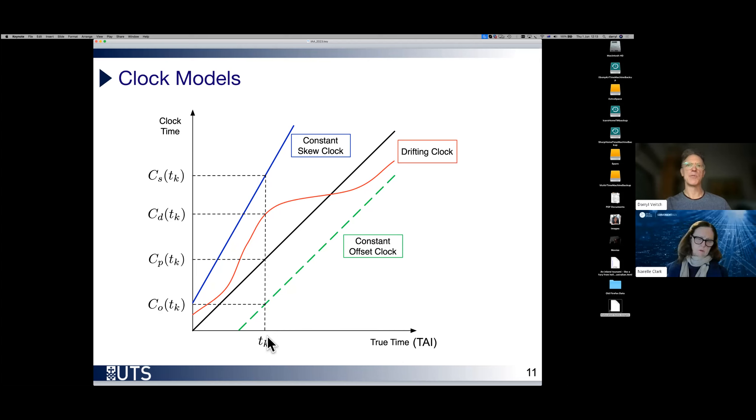A clock which would be slightly out simply by constant would be this green one. One which is going at the wrong rate would be this blue one. And more realistically, we have this red curve, which shows how actual clock hardware moves around, drifts away from a simple model over time. Now drift is very much driven just by temperature changes.